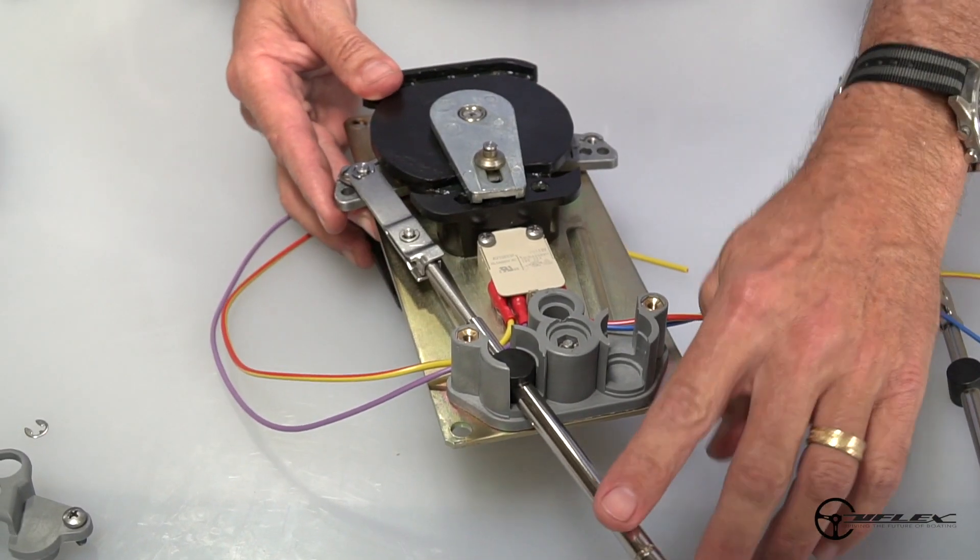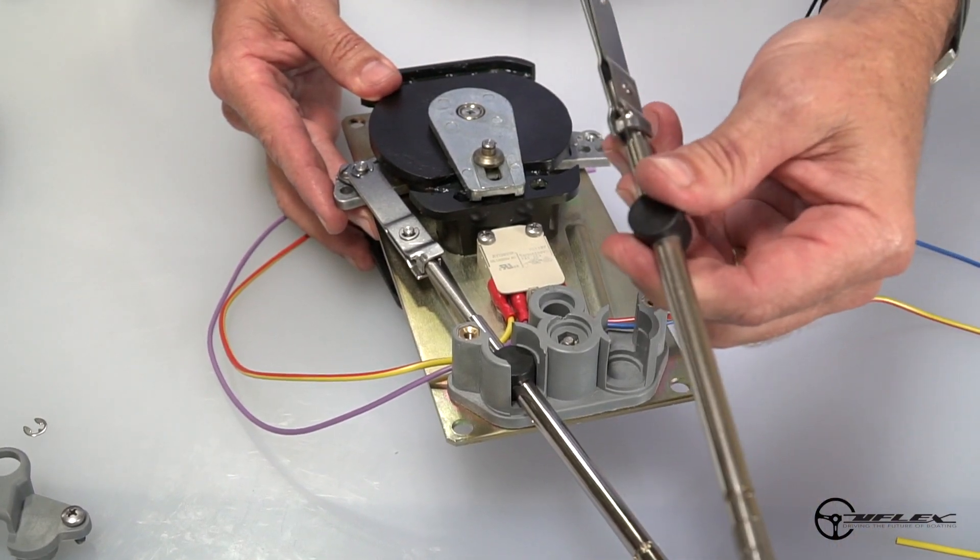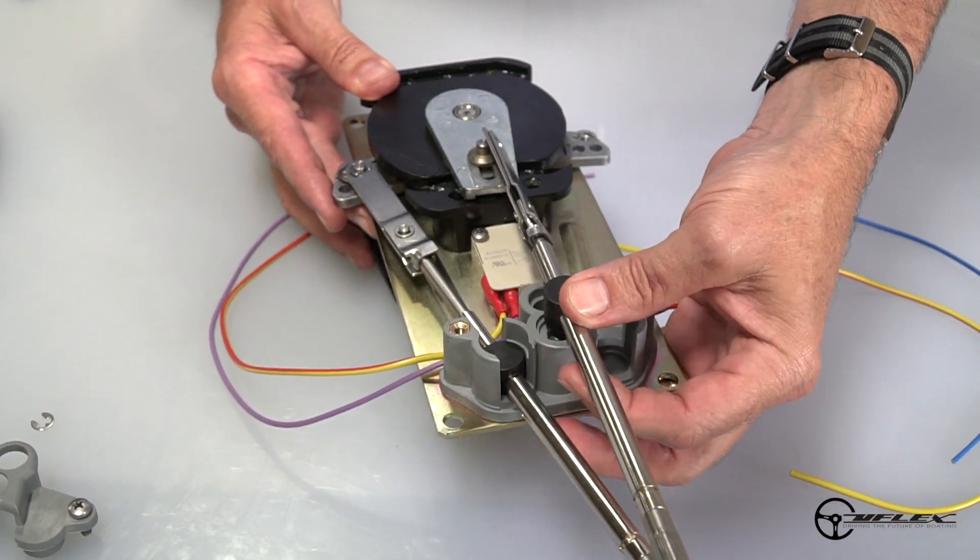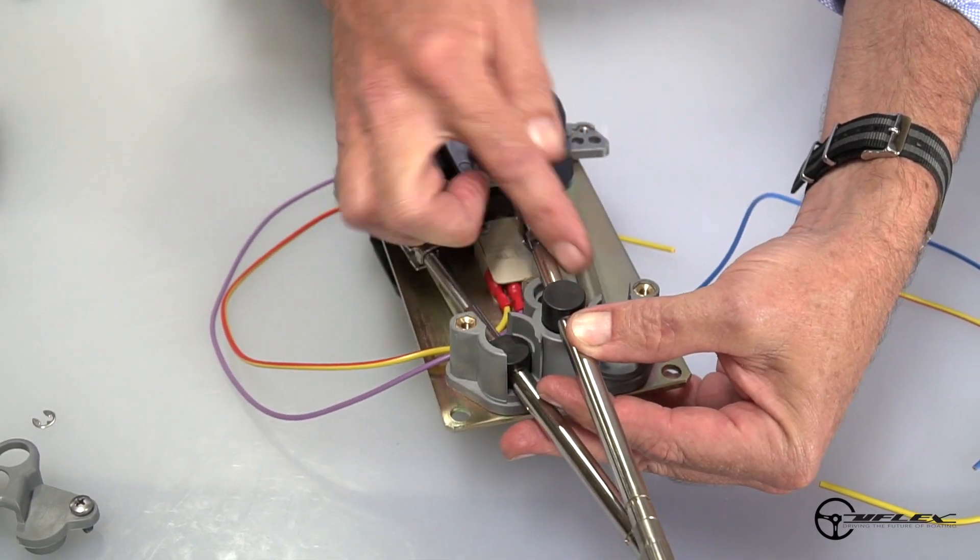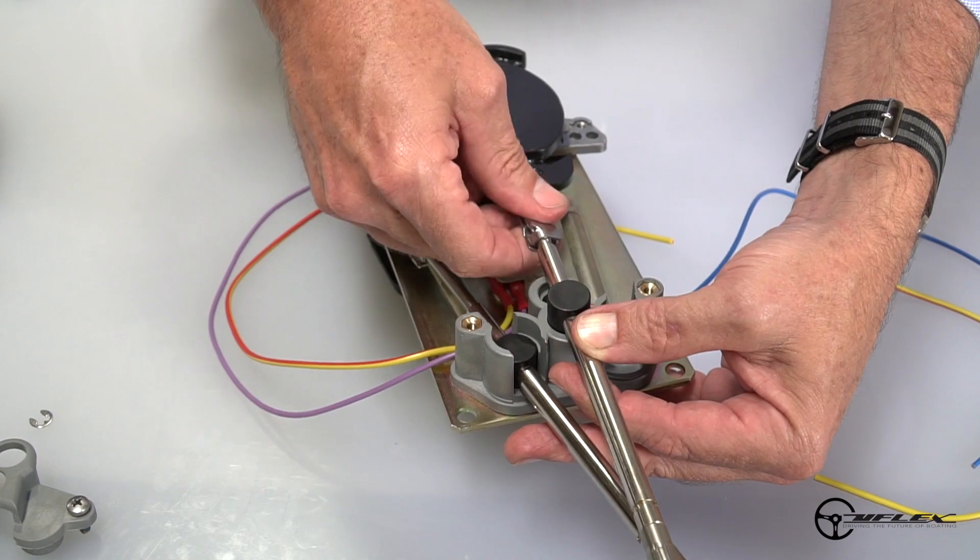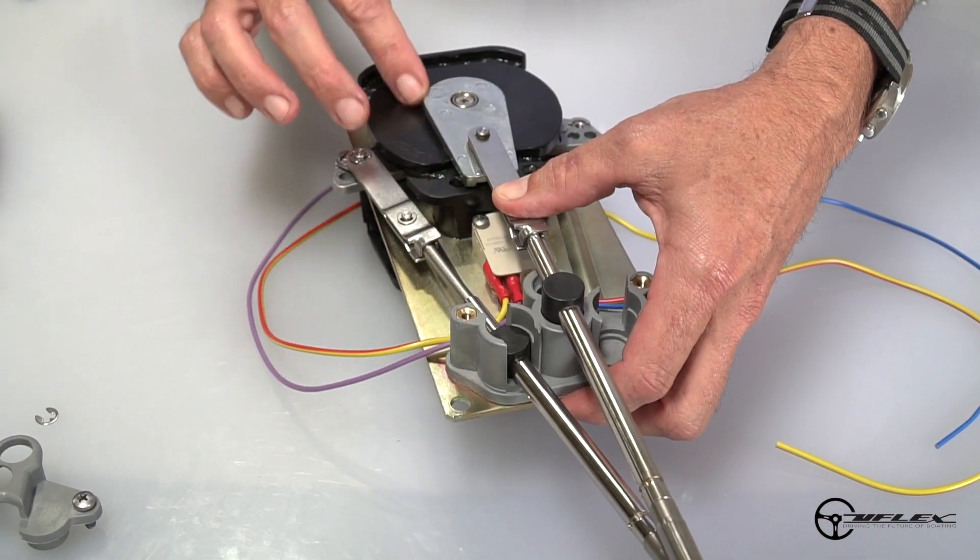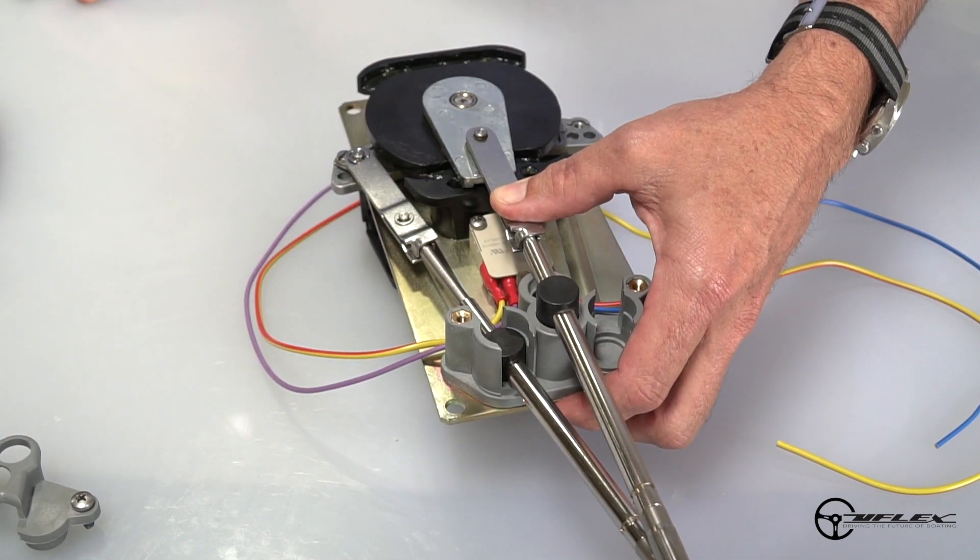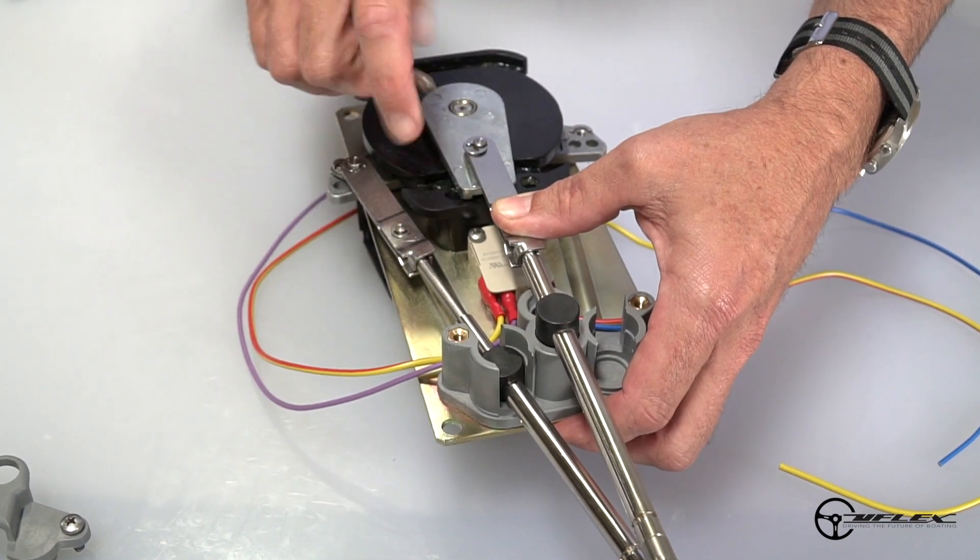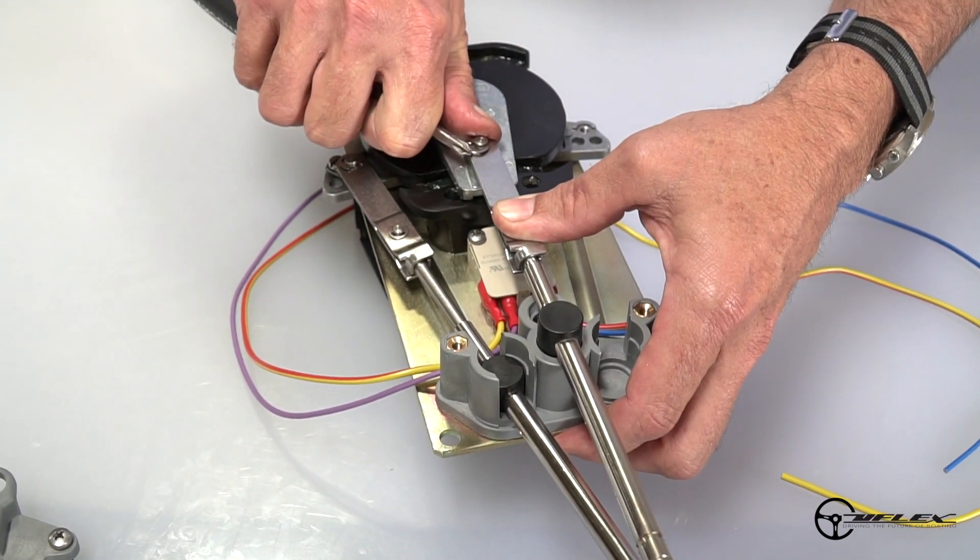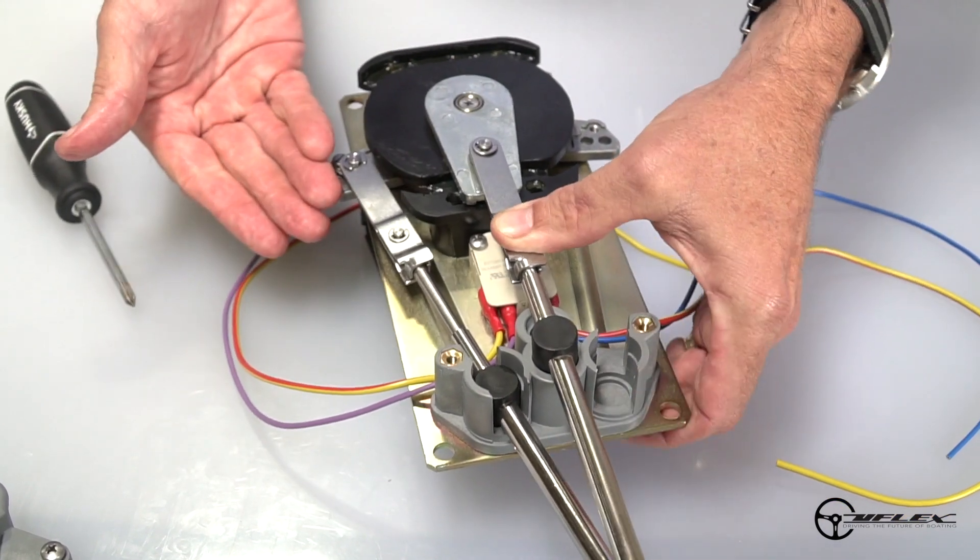Now that I've got my shift cable installed onto the control, it's time to do the throttle cable. I've installed the K35 on the end of the throttle cable and put it into this receptacle here in the aft-most hole. Then I position the other end of the cable over the post on the throttle cam and put another circlip in. Now I've got the two cables installed on the control.